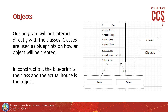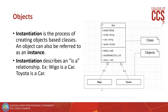Whatever attributes and methods the car class has will be passed down to its objects. So Wigo will have brand, model, color, and speed, and will be able to start, accelerate, and stop. Same thing for Toyota — it gets all the attributes and methods of the car class. The process of creating objects is called instantiation, and an object can also be referred to as an instance.